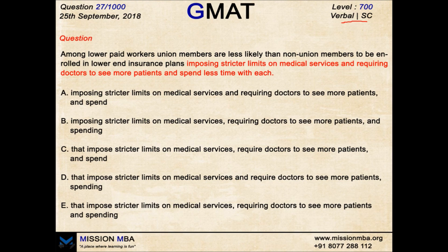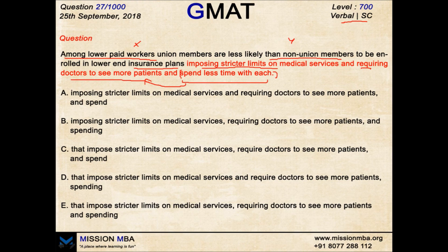Before heading in, let's understand what needs to be parallel. The meaning says that X are less likely than Y to be enrolled in lower-end insurance plans. Now these plans do two things: they impose stricter limits on medical services, and they require doctors to see more patients. But be careful — 'spend less time with each' is not an independent action of the insurance plans; it is the result of requiring doctors to see more patients. This is a cause-effect relationship.